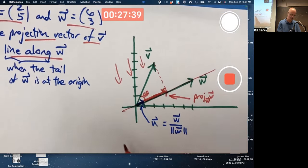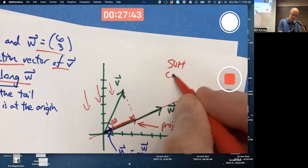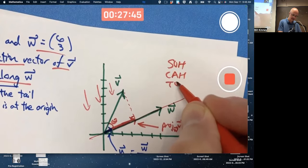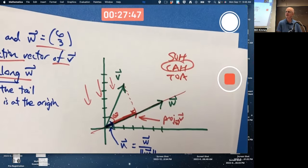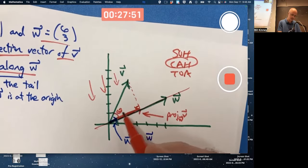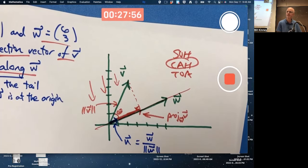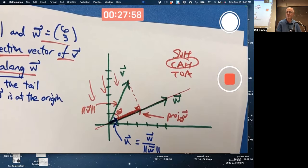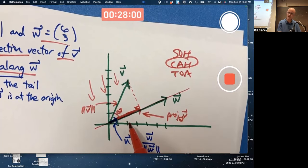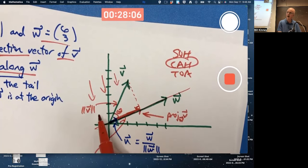So, SOHCAHTOA. Use the CA version. The simplest. Cosine is adjacent over hypotenuse. The hypotenuse has a length equal to the magnitude of V. Which you can figure out, yes, for this problem, but I'm not going to bother right at the moment.